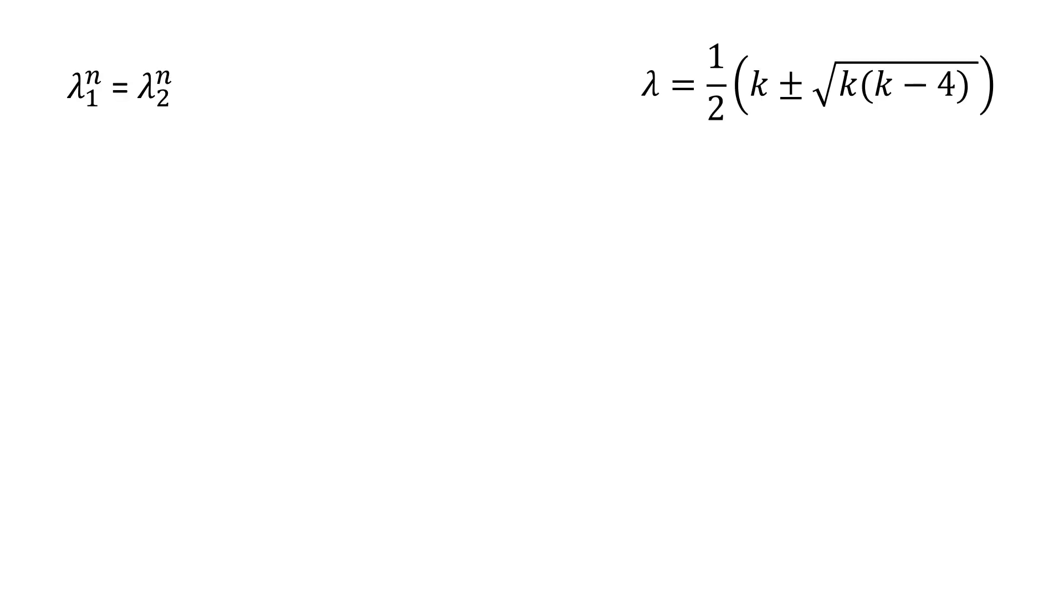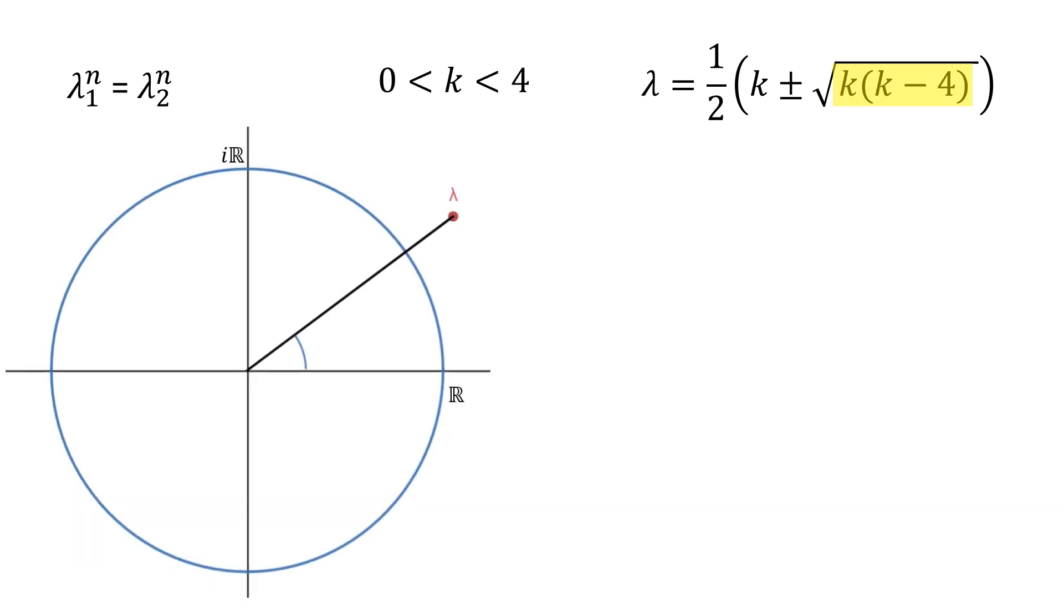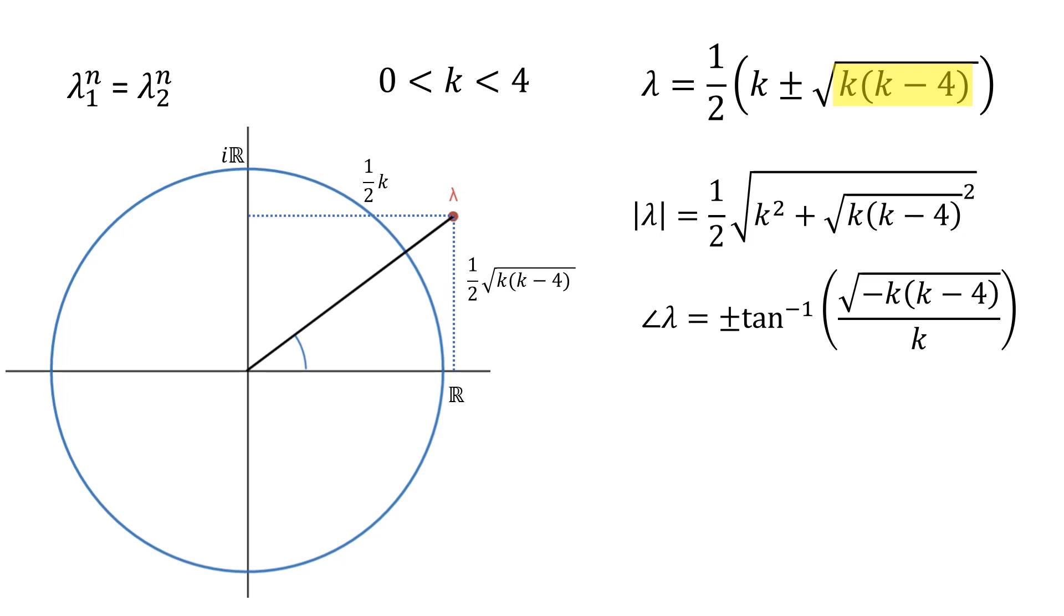Since we want the imaginary part to be non-zero, k times k minus 4 must be negative, which means k is between 0 and 4. These possible values of k are already starting to look like what we saw before. The magnitude of the eigenvalue is the length of the black line, which can be calculated using the Pythagorean theorem like this. And the important quantity, the angle, is the inverse tangent of the ratio of the side lengths of the triangle. The angle is positive or negative depending on which eigenvalue you're looking at.